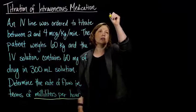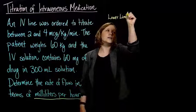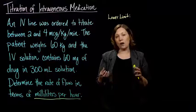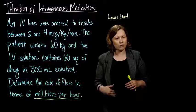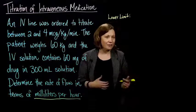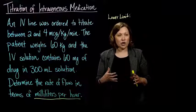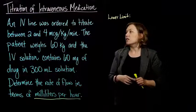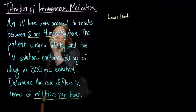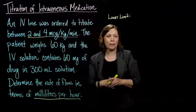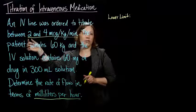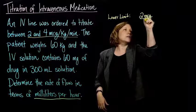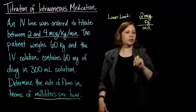We'll start with the lower limit. Your book goes through a process with a few steps, and you're welcome to follow that process. I feel like the steps are pretty logical, so if you just think through them rather than memorizing a process, you can solve these. What's been ordered is between 2 and 4 micrograms per kilogram per minute, so our lower limit is 2 micrograms per kilogram per minute.